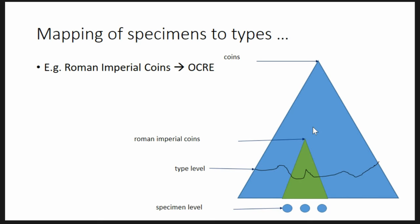I want to dig into one example. What we are doing is linking our coins — or part of the coins that are reflected in the typology of the Roman Imperial Coinage — to the OCHRE system. As Ethan showed in his talk, we use Open Refine to figure out how the connection should be made. But the issue is this linkage is in fact quite complicated.